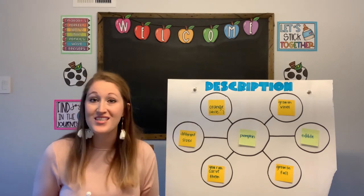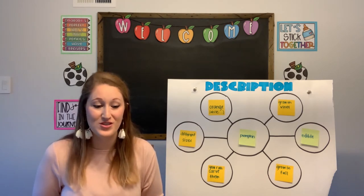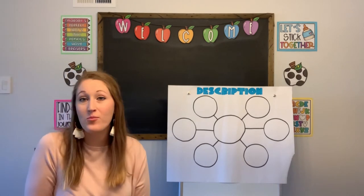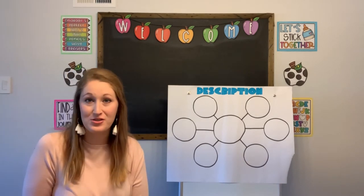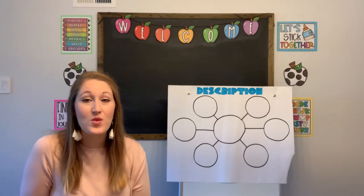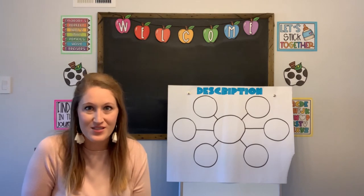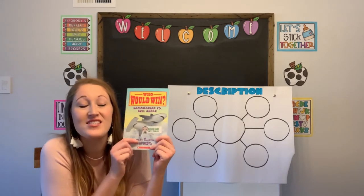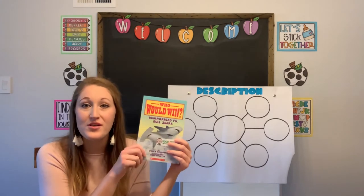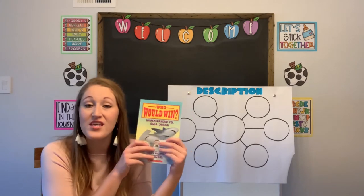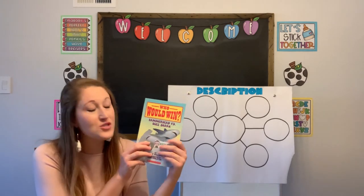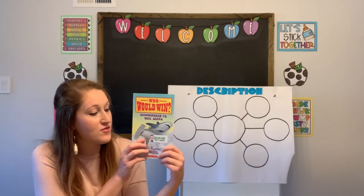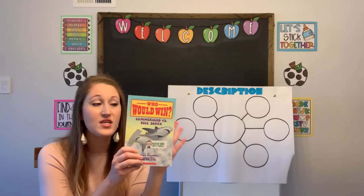Now we're going to put this to the text and read a book to see if we can fill out a description chart. This week we're reading an awesome nonfiction series called Who Would Win? Each day we'll read a different book from this series. It focuses on two different animals and what would happen if they got in a fight, comparing the two. Today we're reading Hammerhead versus Bull Shark by Jerry Pallotta.